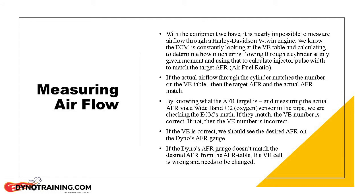If the VE cell is correct and matches the actual airflow through the engine at this RPM and throttle position, then the air-fuel ratio measured at the exhaust will match the target air-fuel ratio on the air-fuel ratio table. If it does not match, that means the VE table cell we were running in is incorrect for the actual airflow through the engine at this point, so we change the number in the cell to make it correct.